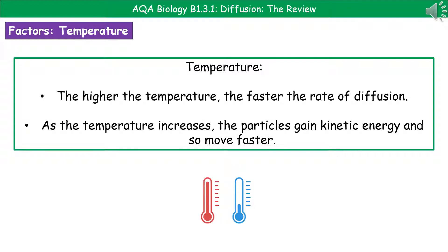Our third and final factor is the temperature. So the pattern that we see here is that the higher the temperature, the faster the rate of diffusion. Now, this is going into a little bit of your chemistry knowledge that hopefully you've picked up already, which is that as the temperature increases, particles gain kinetic energy. And if they've got more kinetic energy, they're moving faster, and therefore diffusion is going to happen faster.